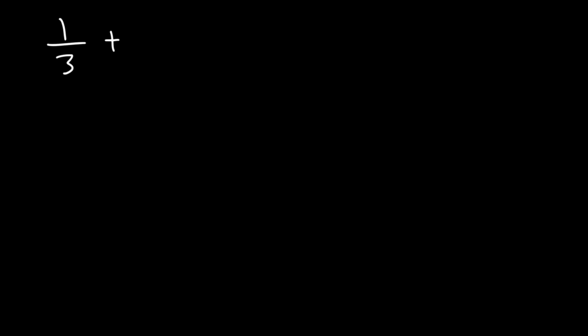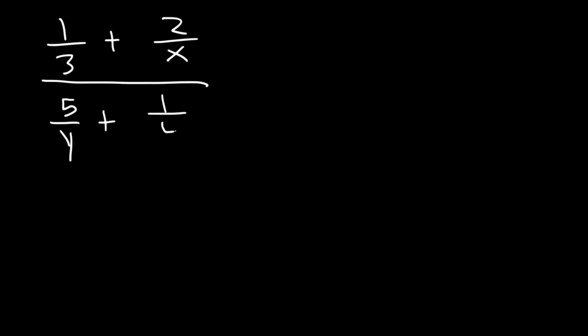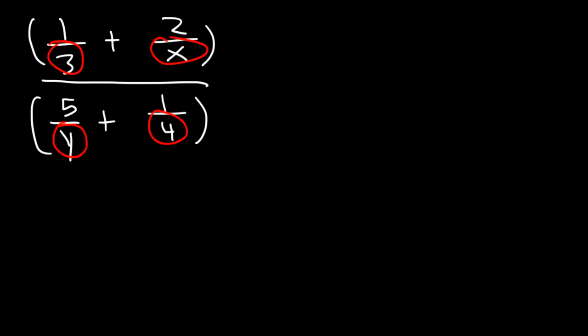Now let's move on to our next example: 1 over 3 plus 2 over x divided by 5 over y plus 1 over 4. So we need to identify the common denominator. The common denominator has to contain a 3, an x, a y, and a 4. 3 times 4 is 12, so the common denominator is going to be 12xy.